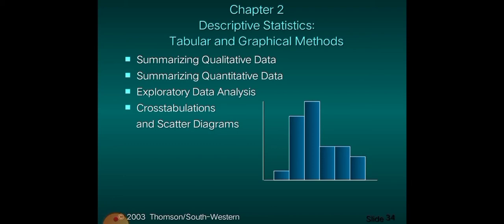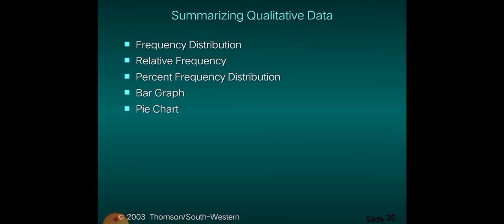Chapter 2 is about descriptive statistics — the tabular and graphical methods. This is all about presenting the results of gathered data in the form of tabular and graphical methods. We're going to cover summarizing qualitative data, summarizing quantitative data, exploratory data analysis, cross-tabulation, and scatter diagrams.